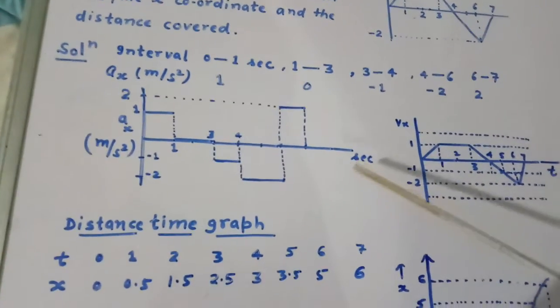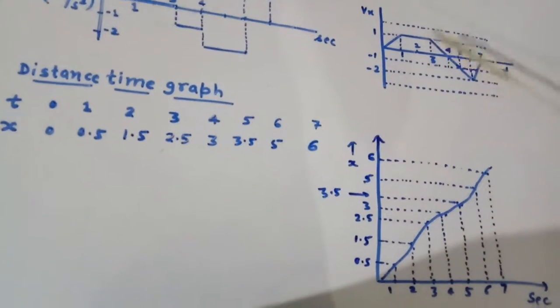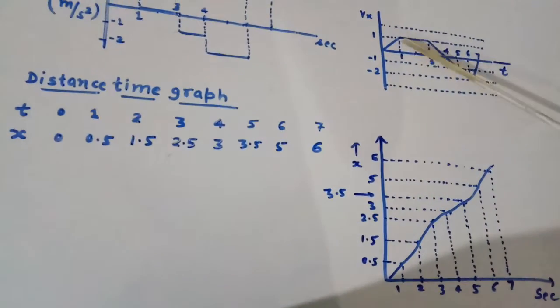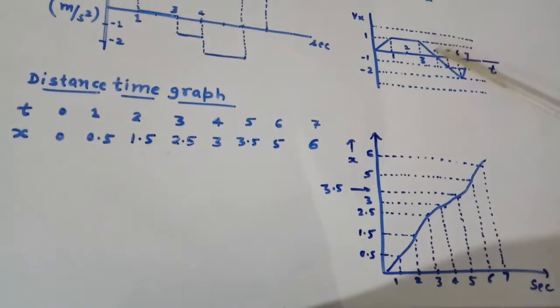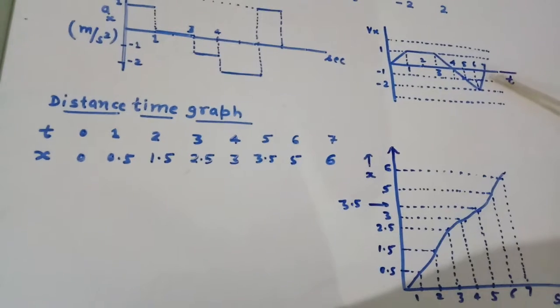Now, in order to calculate distance covered, we find the area of the diagram here. We calculate area during this time. Then here this is rectangle. Then this is triangle. Then this is triangle. Then here this is trapezium. Then this is triangle.